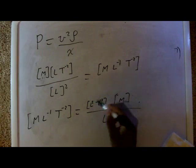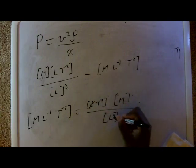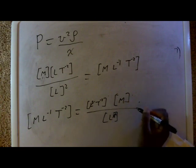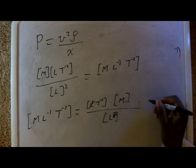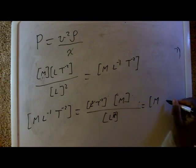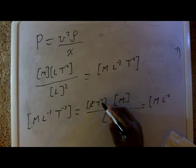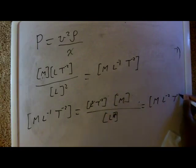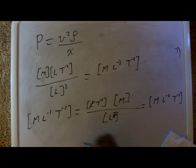Now these guys all cancel, and this guy cancels to two. So what we have left is M, L negative two, and that right there, T to the negative two.